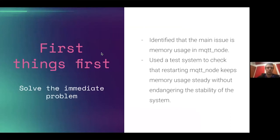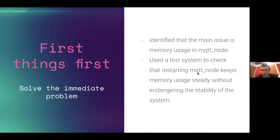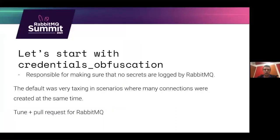Before doing all that deep investigation, we have a customer with thousands of their own customers who are not happy. So we identify the main issue — the MQTT node is getting filled up — and use a test system to check that restarting this internal process helps. What makes Erlang fantastic is that we can restart this subprocess without restarting everything, so the system keeps running. We couldn't solve it fully yet, but we could limp along while figuring out more.